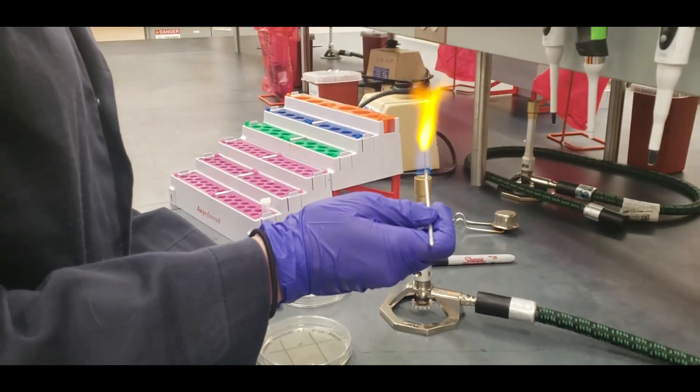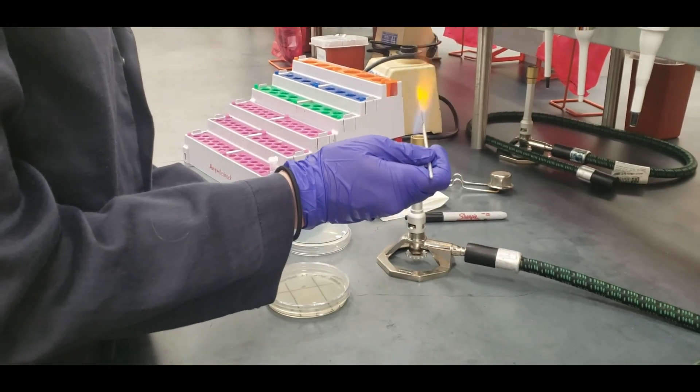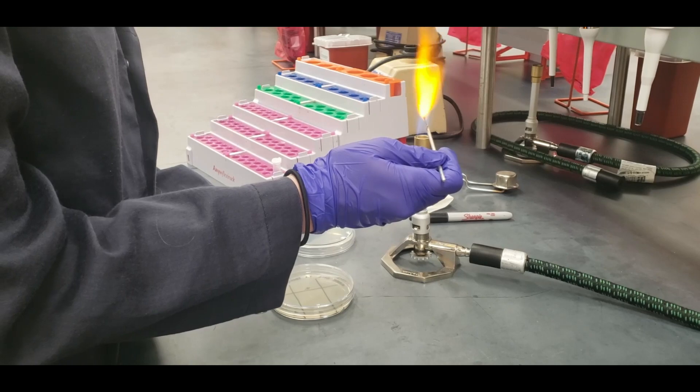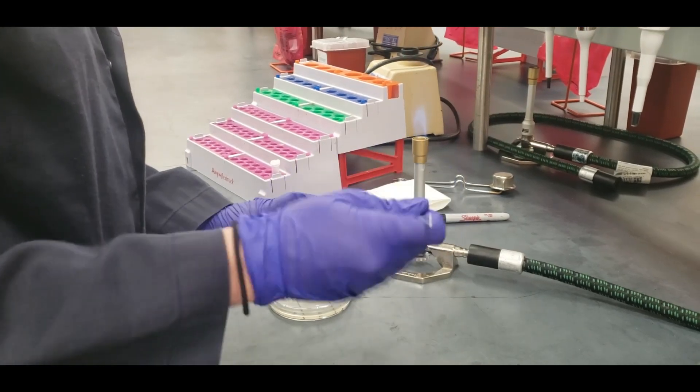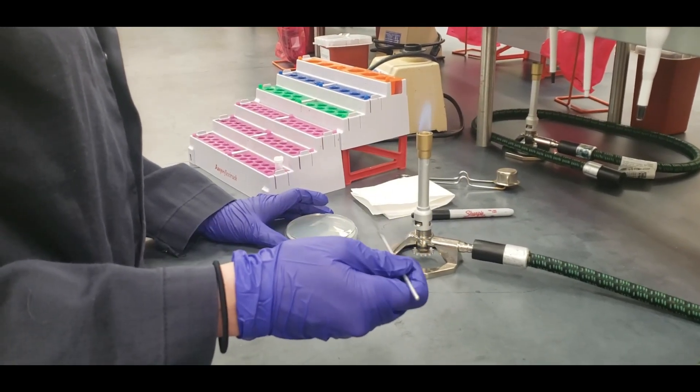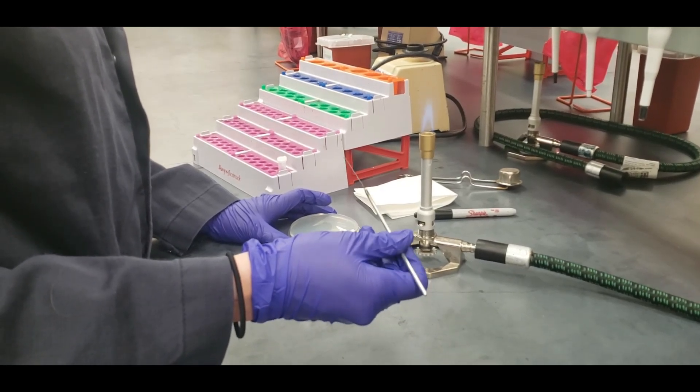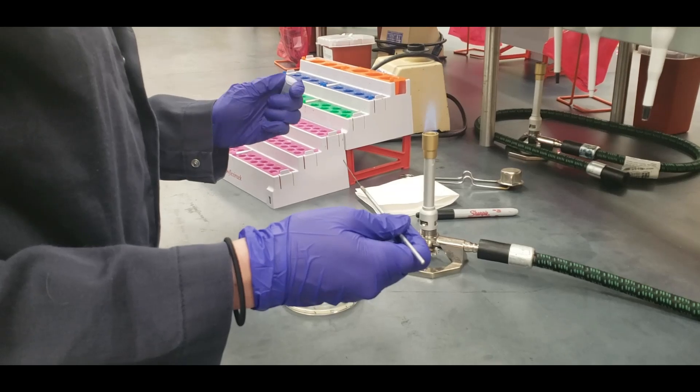You're going to sterilize your loop. And then you're going to make sure you let it cool all the way down so that when you stick it in the culture tube, you don't burn any bacteria. Make sure you work around the flame as well to prevent contamination.